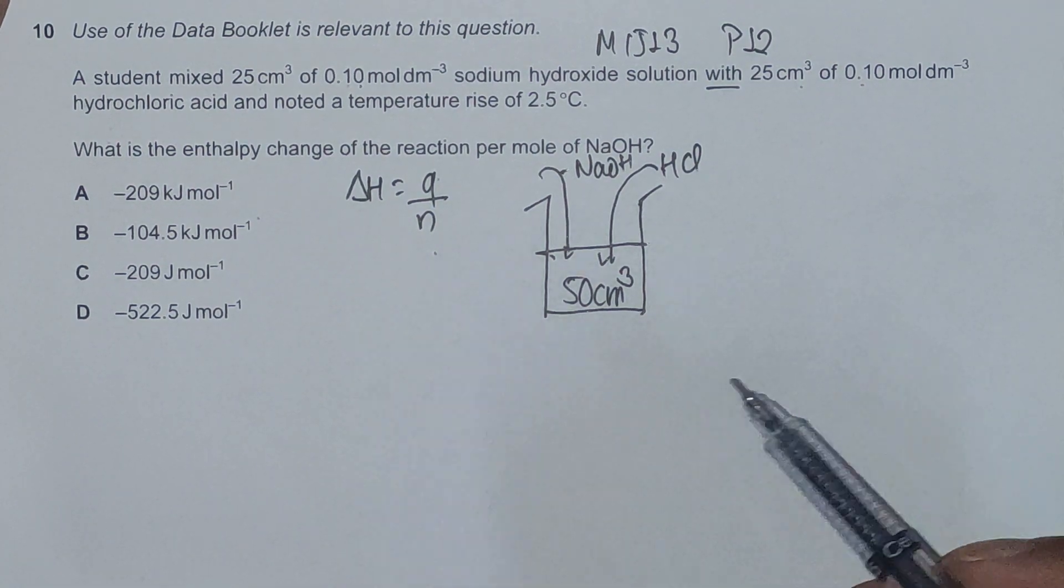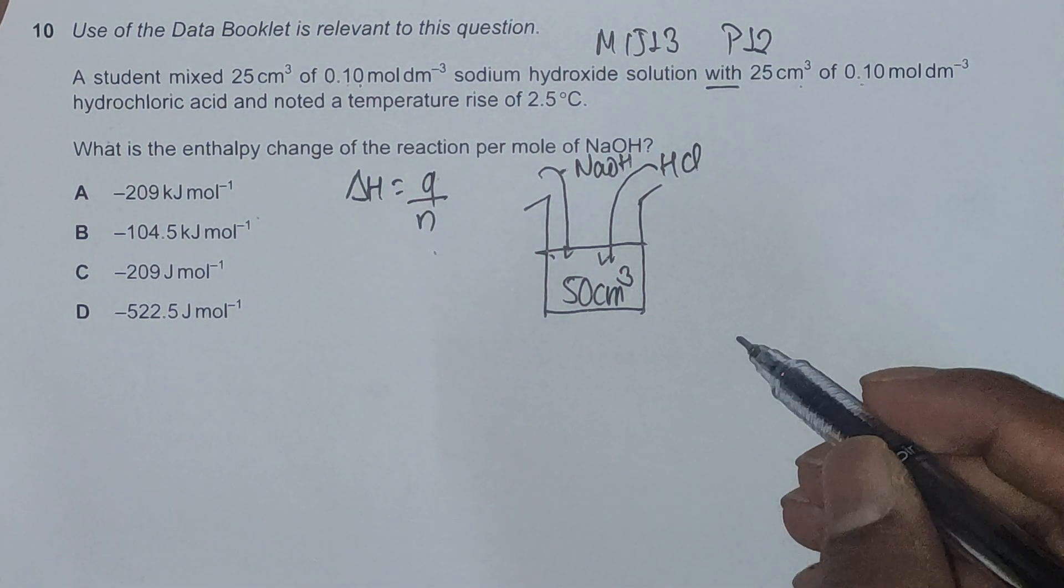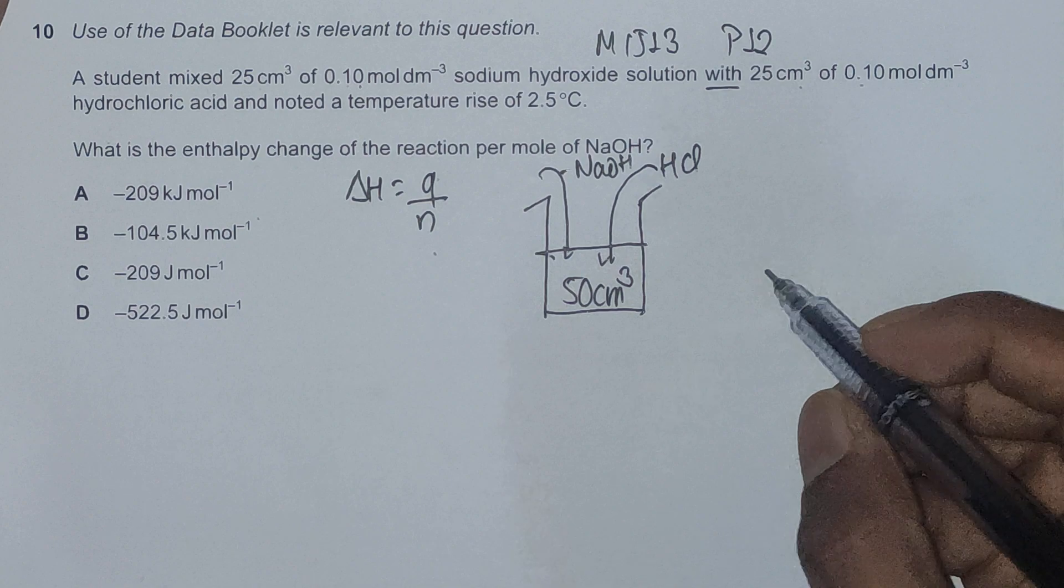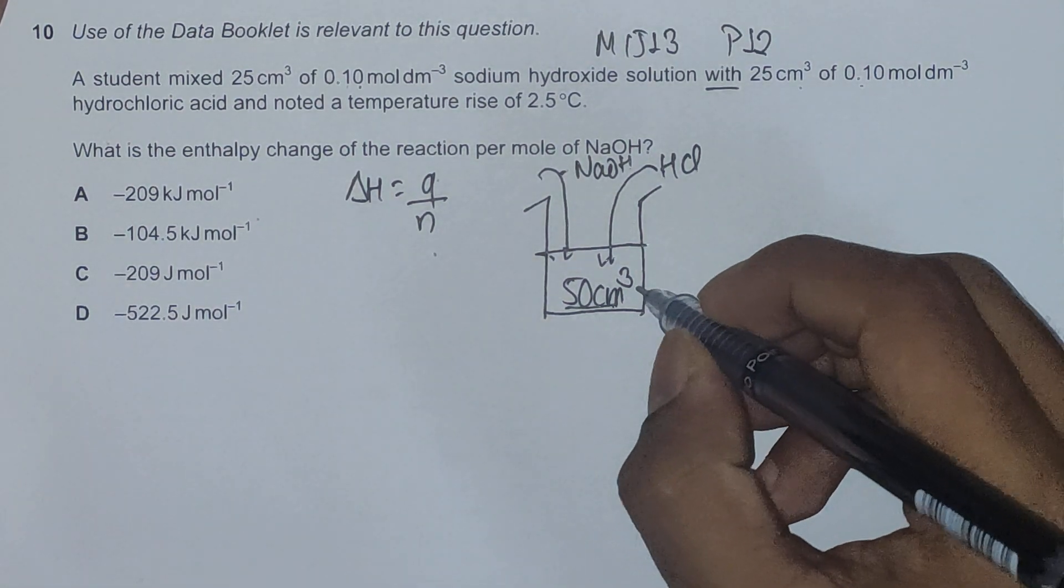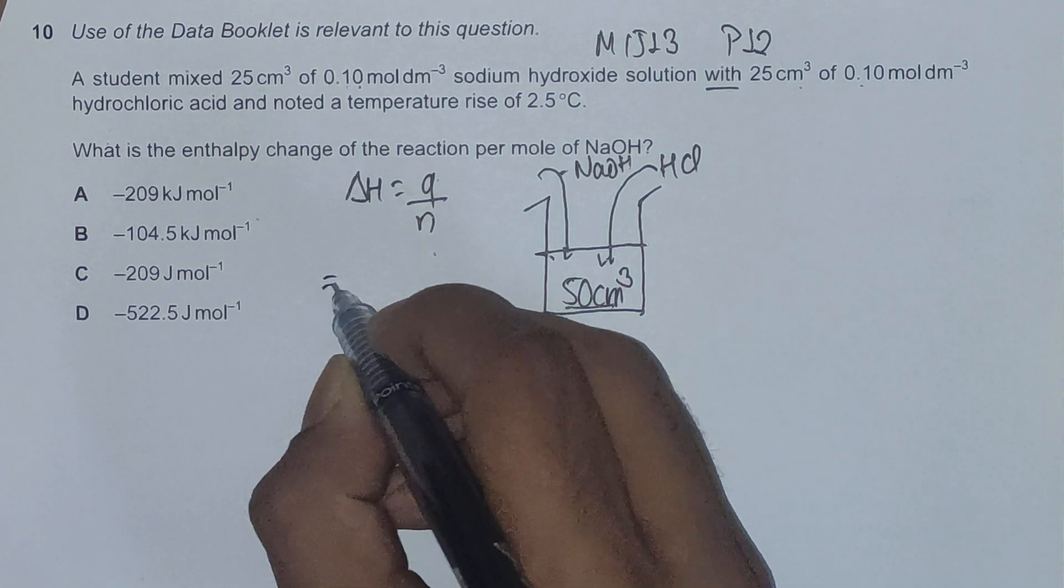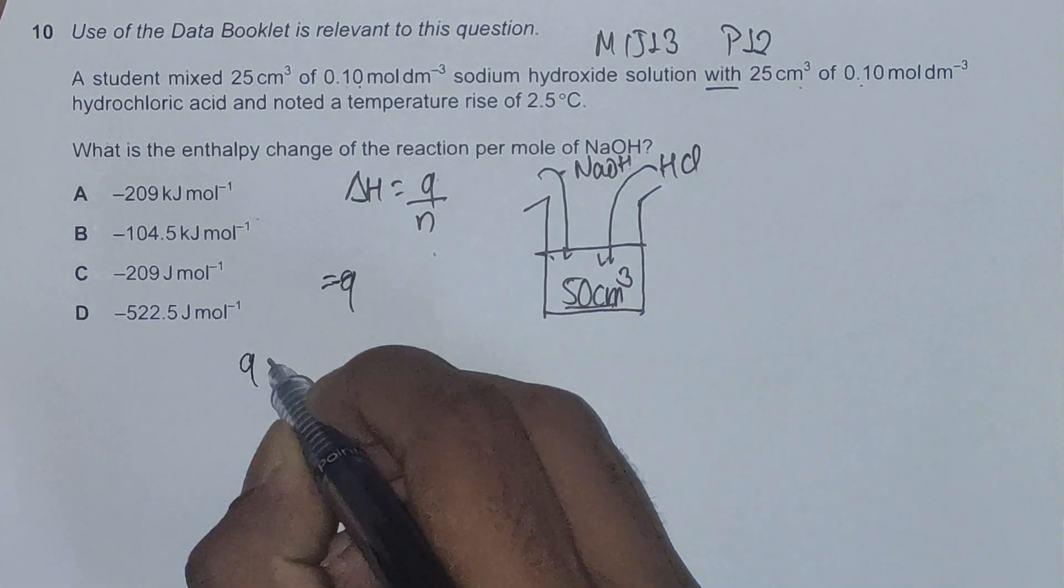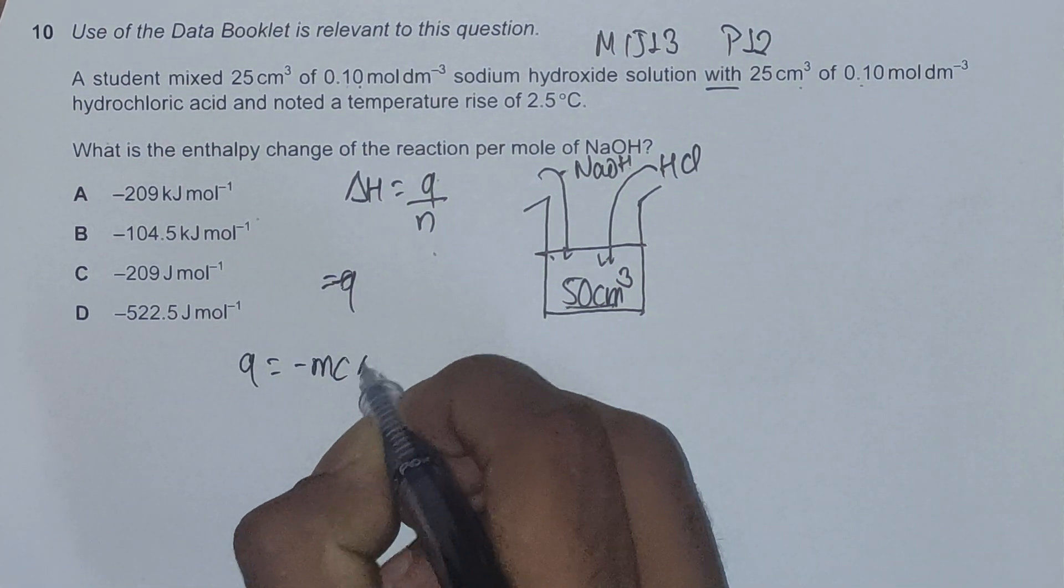There's a slight assumption we'll make to solve this type of question, which is that the 50 cm³ solution is mostly water. This is to make the calculation easier, so this is just a basic assumption. The formula for Q is Q equals negative mcΔT.